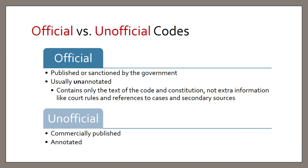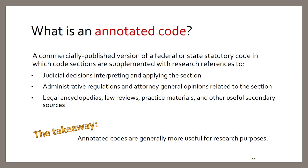As we saw with session laws, there are both official and unofficial editions of statutory codes. The official is the one published by the government, and these are typically unannotated. The unofficial versions are commercially produced and contain annotations. An annotated code is a commercially published version of the code which contains not only the text of the code but is supplemented with editorial enhancements to aid research — things like citations to and summaries of judicial decisions interpreting the code section, citations to administrative regulations and attorney general opinions, and research references to secondary sources like legal encyclopedias, law reviews, and practice materials. This makes annotated codes really useful for research.